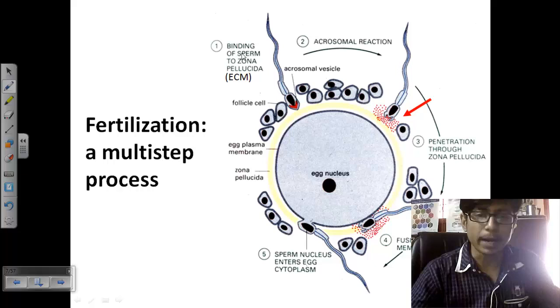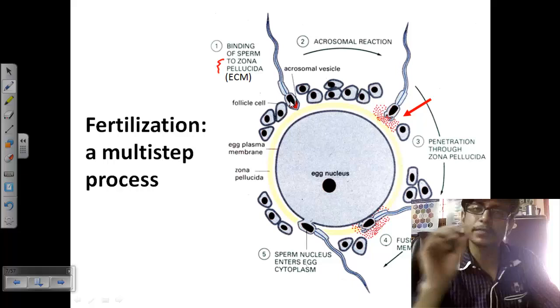In the process of fertilization, binding of sperm occurs at a specific region. In the case of mammals, this region is called the zona pellucida.